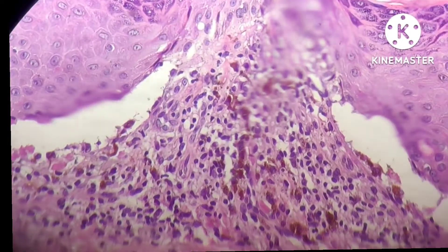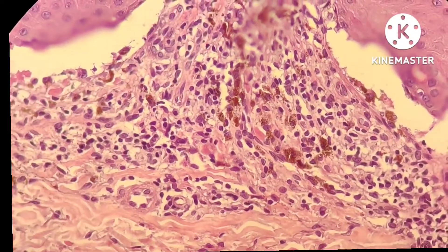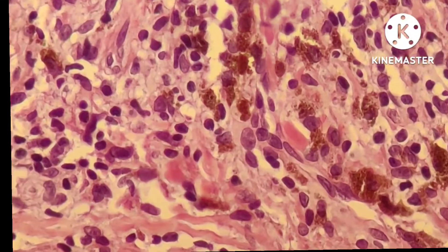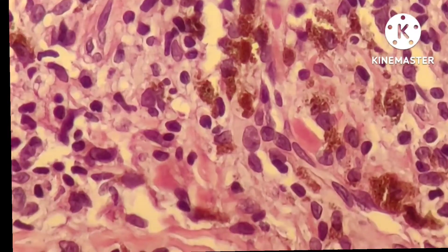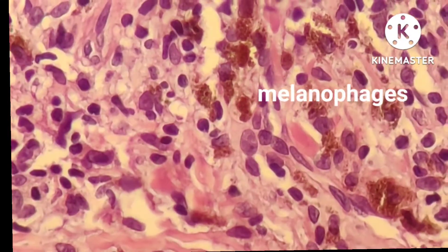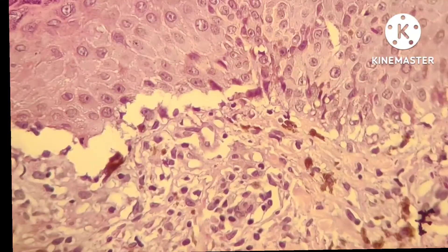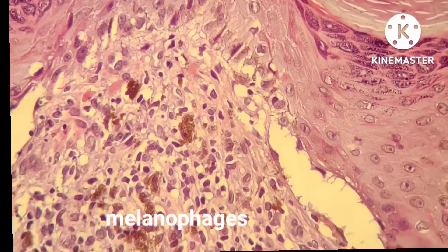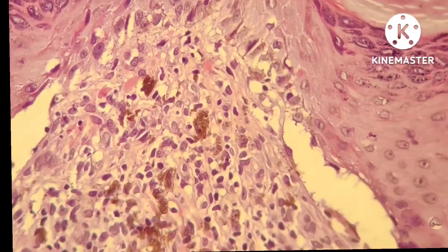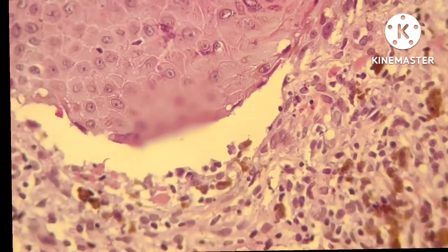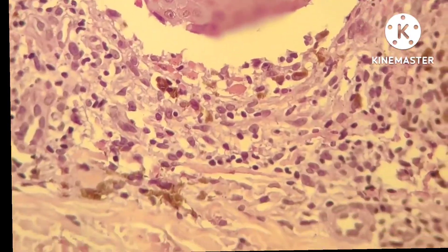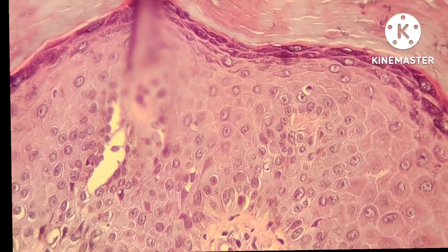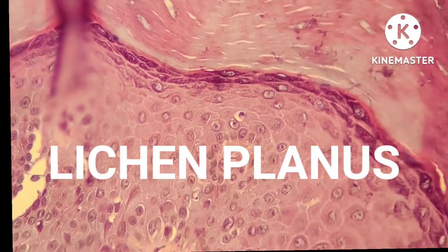Putting all the microscopic findings together: compact hyperkeratosis, no parakeratosis, irregular acanthosis, saw-toothed appearance, hypergranulosis especially wedge-shaped, band of inflammatory infiltrate closely hugging the epidermis, Max-Joseph space, basal vacuolar degeneration, civatte bodies, and inflammatory infiltrate consisting of lymphocytes, macrophages and plenty of melanophages. So the diagnosis is lichen planus — interface dermatitis.